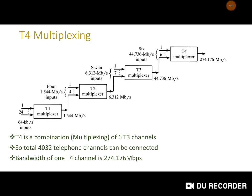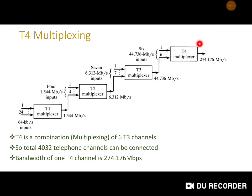After T3, the next level is the T4 multiplexer. In T4, six T3 outputs are connected, resulting in a speed of 274.176 Mbps. At this level, 4032 telephone channels can be supported. T4 connections use optical fiber exclusively to handle this many channels.